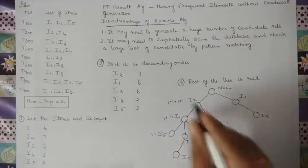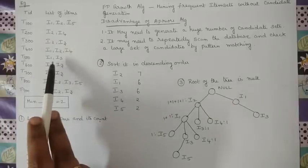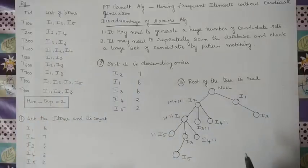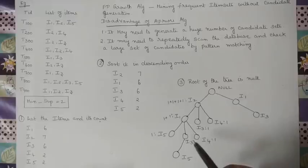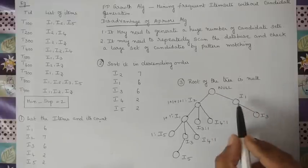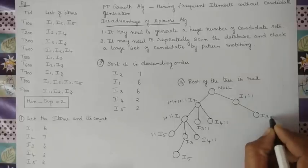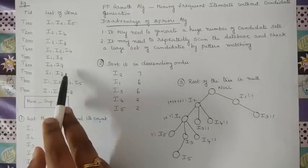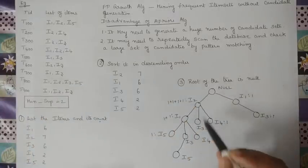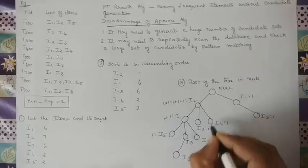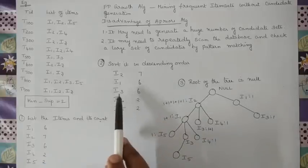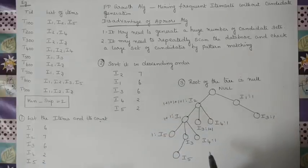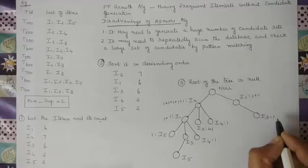Transaction 5 is I1, I3 — already ordered. Since this path comes from I2, we cannot use that branch, so we take it from null. I1 occurs once and I3 occurs once on this new path. Transaction 6 is I2, I3 — already ordered. I2 to I3 path already exists, so both get plus 1. Transaction 7 is also I1, I3 — already ordered. The existing I1, I3 path from null is updated with plus 1 for each.